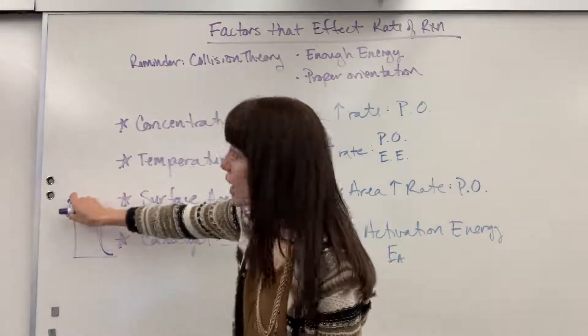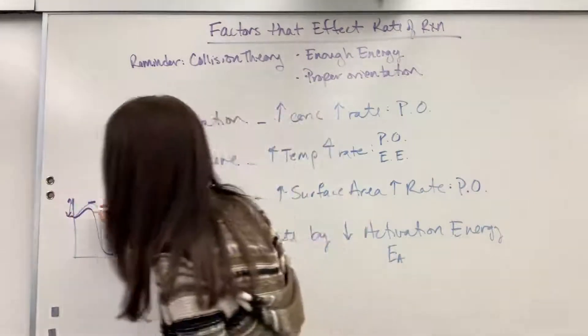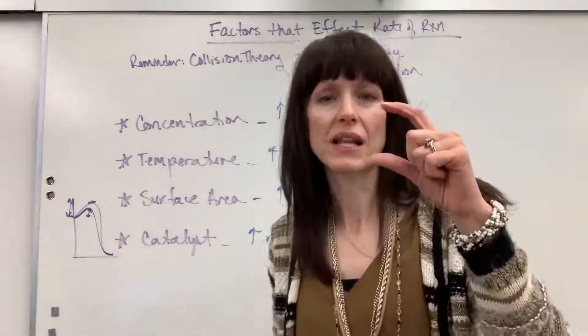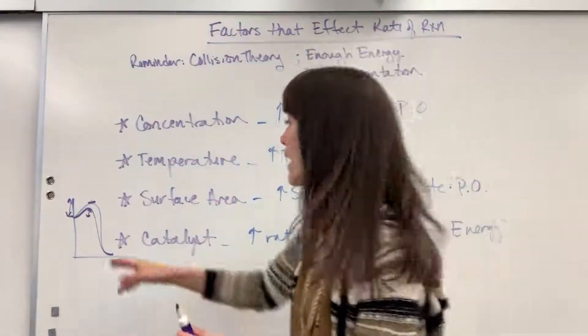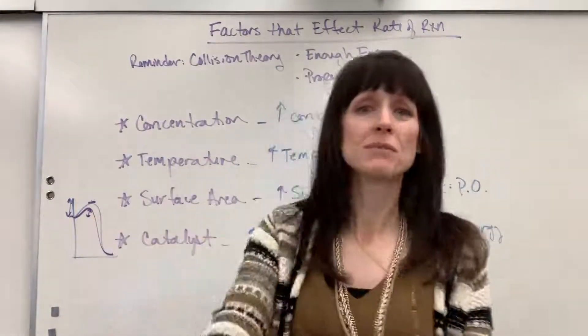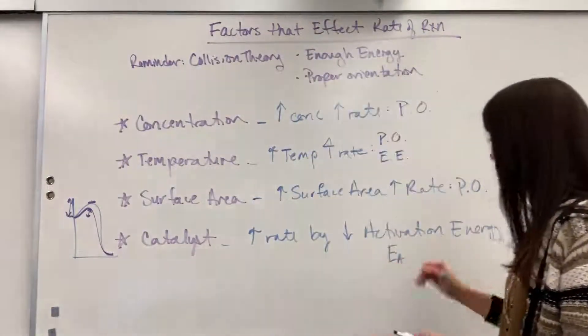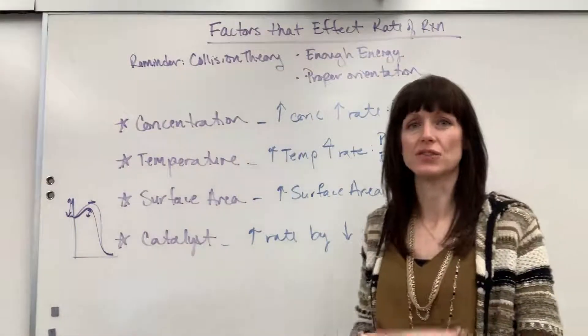So instead of needing maybe 100 kilojoules for activation energy, now we only need 70 kilojoules. So by decreasing the activation energy, the rate's going to go faster because you don't have to put as much energy into it. So catalysts are going to increase the rate by decreasing the activation energy.